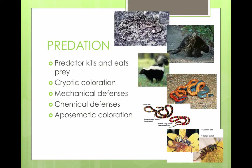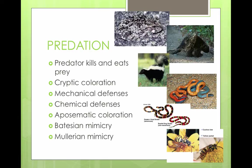Aposmatic coloration is when there are bright warning colors. Batesian mimicry is when one harmless species mimics another species that is harmful. Müllerian mimicry is when two or more harmful species resemble each other.